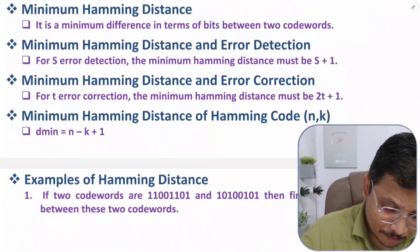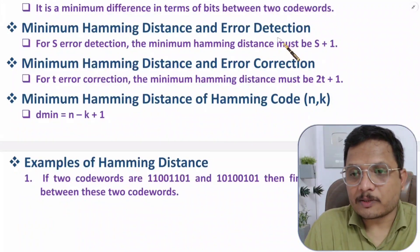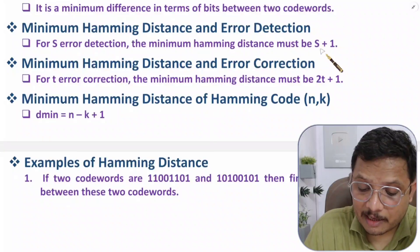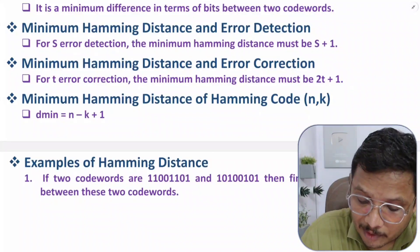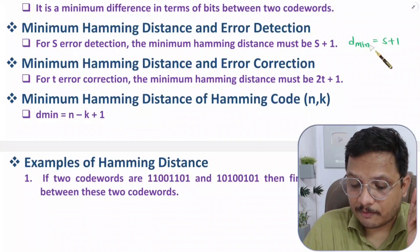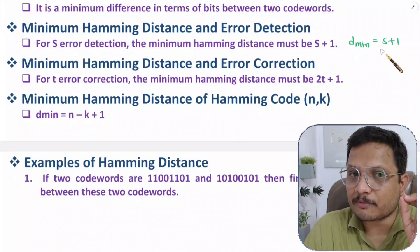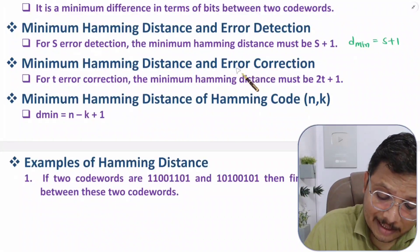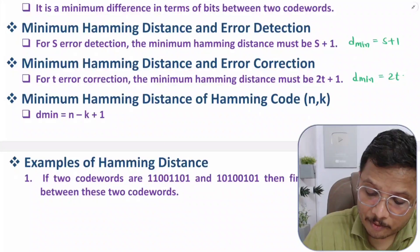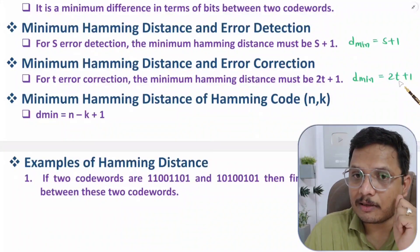If minimum hamming distance is known, we can determine how many errors the system can detect and correct. For s-error detection, the condition is d_min = s + 1. For error correction, the condition is d_min = 2t + 1, where t is the number of correctable errors. For error detection use s + 1, and for error correction use 2t + 1.